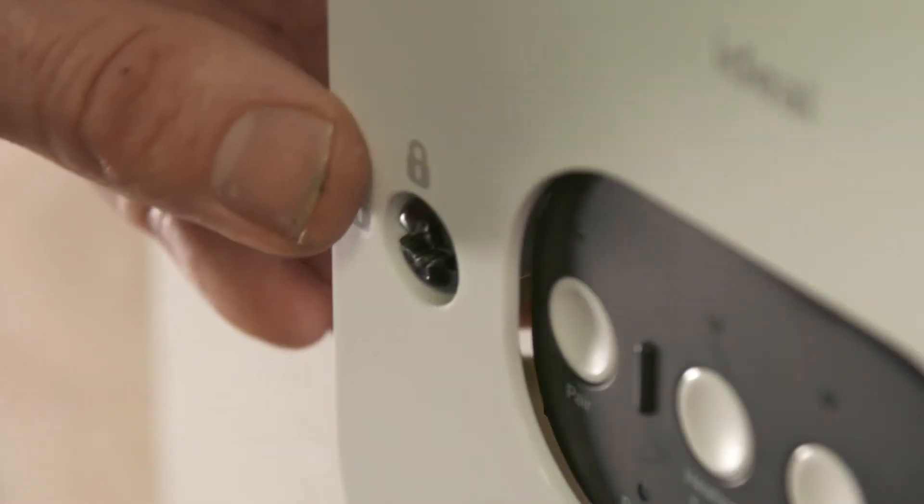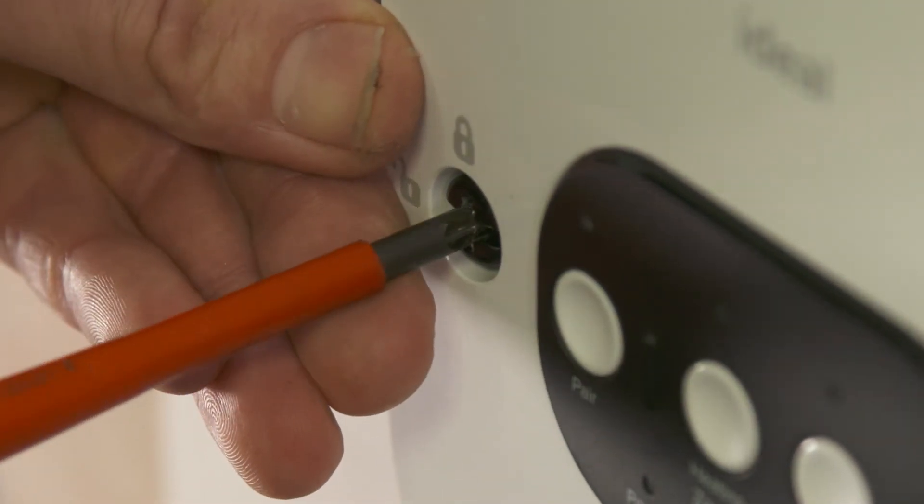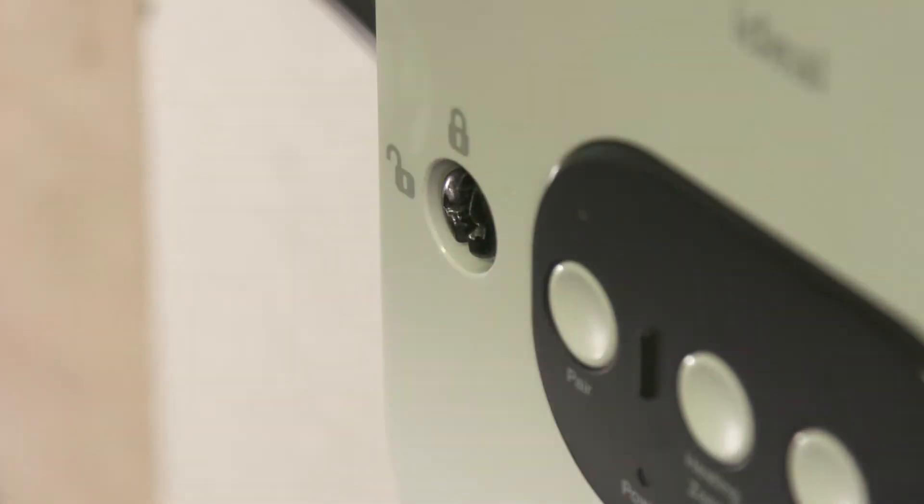Refit the cover onto the smart wiring center. Lock the cover by turning the locking screw one quarter clockwise to the lock position.